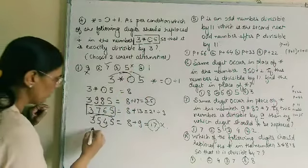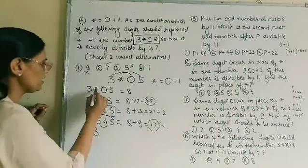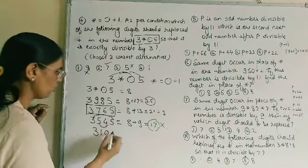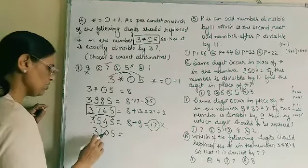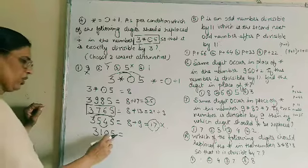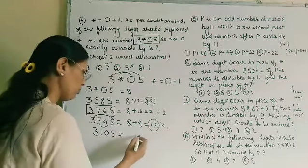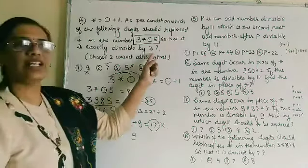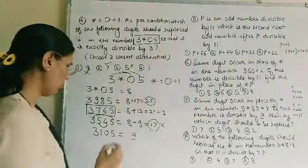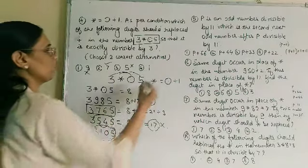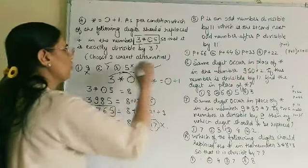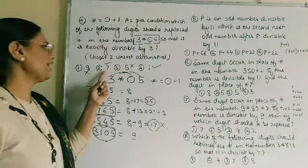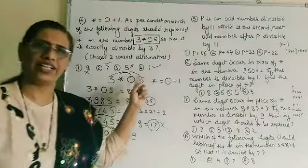Now checking star = 1 and circle = 0: 3 plus 1 is 4, 4 plus 5 is 9. Since 9 is divisible by 3, this number is divisible by 3. Therefore the fourth option is also correct. So both the second and fourth options are correct.